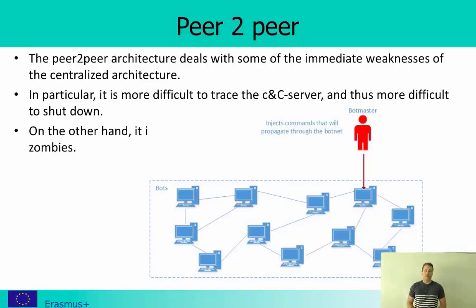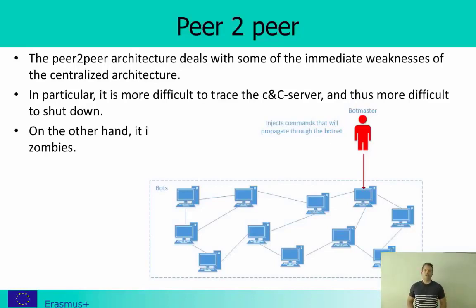One drawback of peer-to-peer architecture is that it doesn't scale very well. If you have a very large network, it may take quite some time for information to get from one machine to another across the whole botnet. So in a really large botnet, it's very hard to have all participants doing things at the same time and to ensure all the malware is updated.